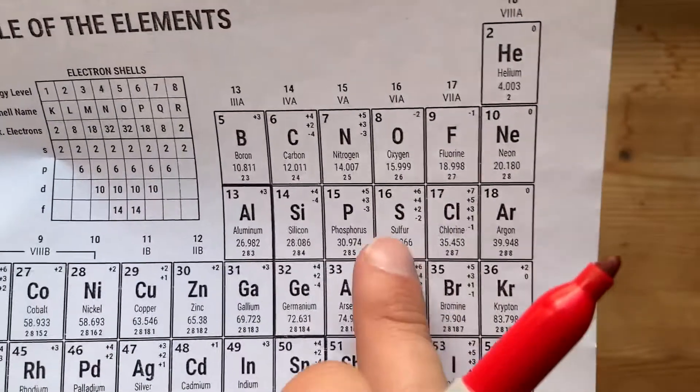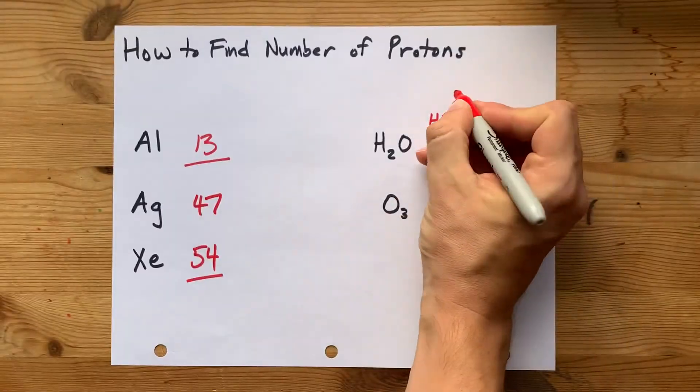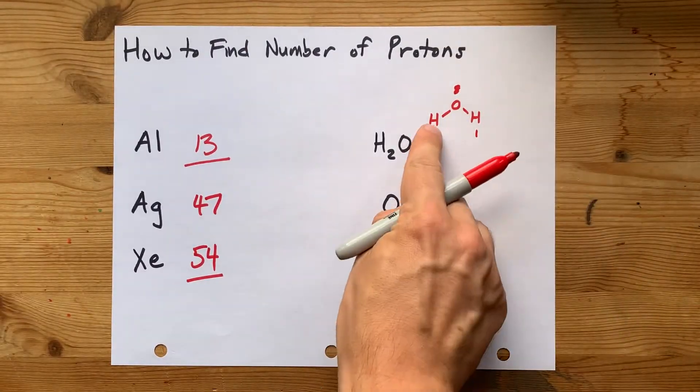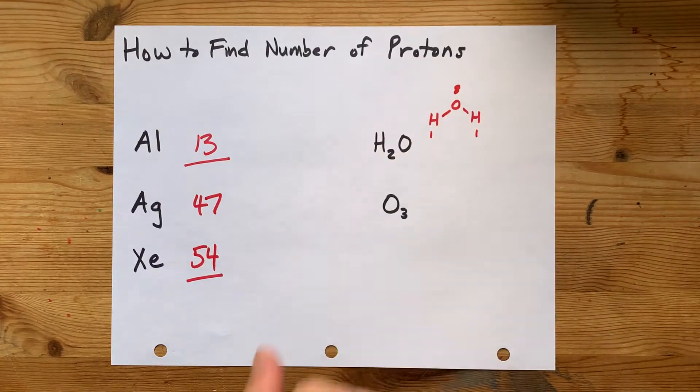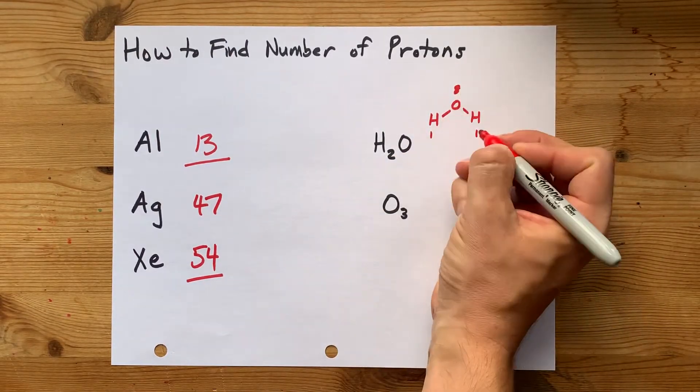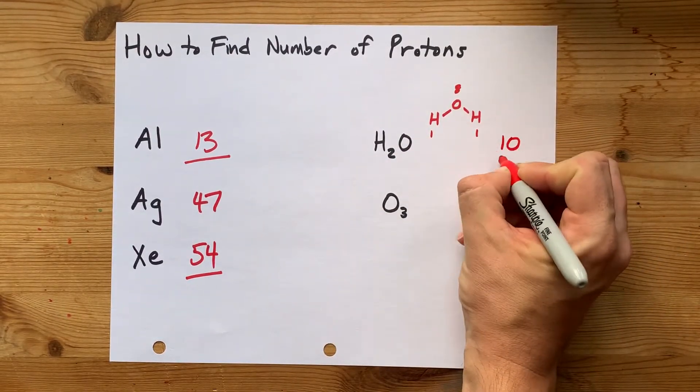And an oxygen is eight. So if you add all of these up, that particle as a whole is one plus eight plus one, or ten protons.